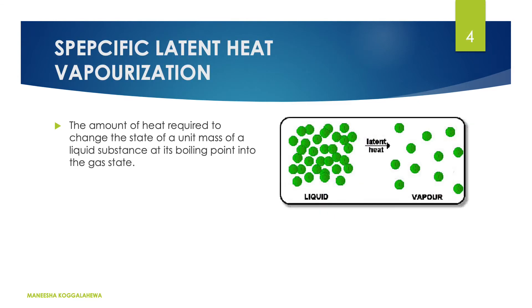Now the specific latent heat of vaporization. Vaporization means the changing of liquid into the gassy state. In this diagram I have also shown the way of turning liquid into water vapor. The specific latent heat of vaporization is the amount of heat required to change the state of a unit mass of a liquid substance at its boiling point into the gassy state.